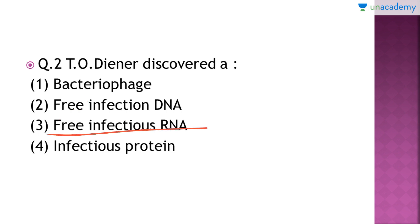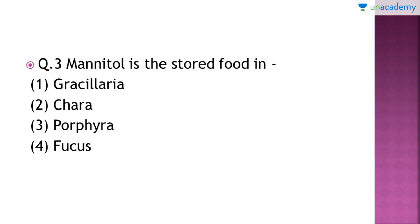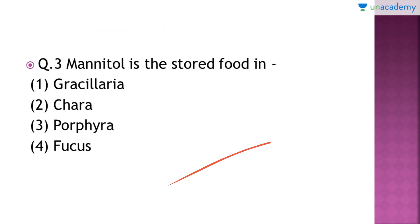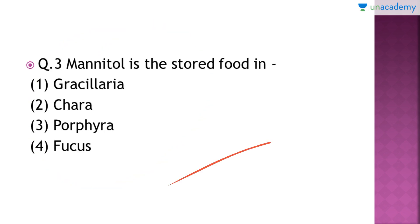It was smaller than a virus and also lacked the protein coat. That's why he named it the free infectious RNA. Moving on to the next question: Mannitol is the stored food in which of the following? Remember, this question is very important and the portion from where it has been taken is also very important. The right answer is option number 4, that is Fucus.